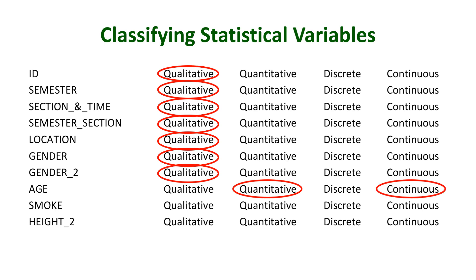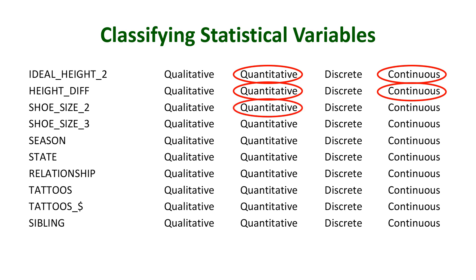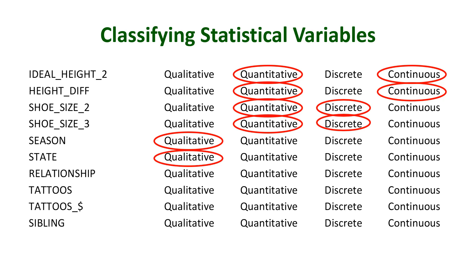Smoke — do you smoke, yes or no — is qualitative. Height is quantitative and continuous since we are measuring how tall a person is. Ideal height is also quantitative and continuous. The created variable height_difference is also quantitative and continuous. Shoe size is quantitative — we go six, six and a half, seven, seven and a half — there is no size between six and a half and seven, making it our first example of a discrete variable. shoe_size_3 is also discrete. Season and state are qualitative, and relationship is qualitative.